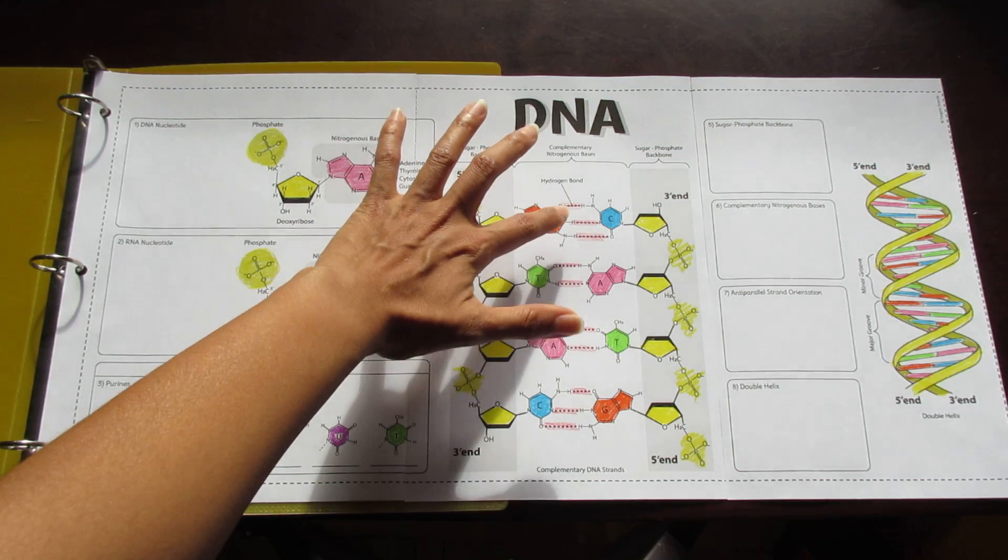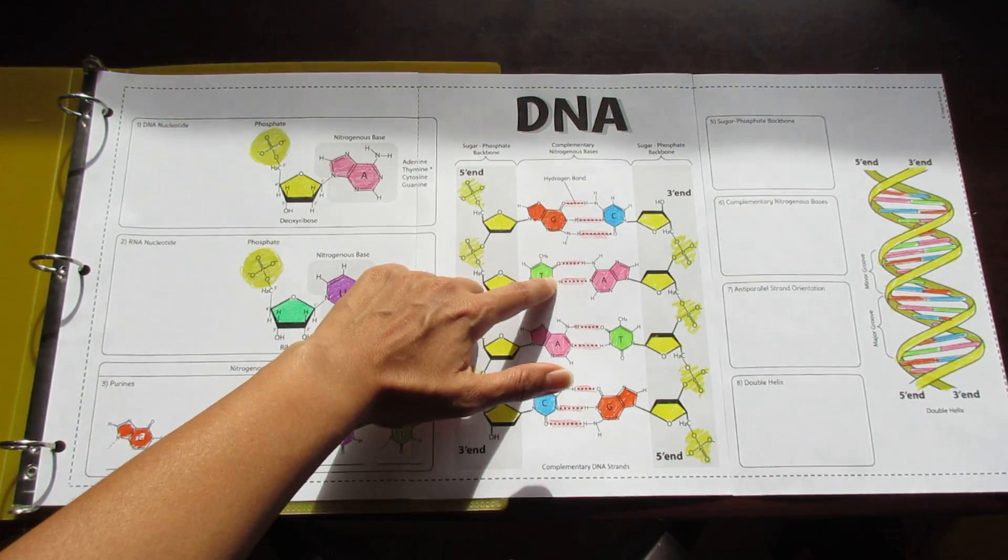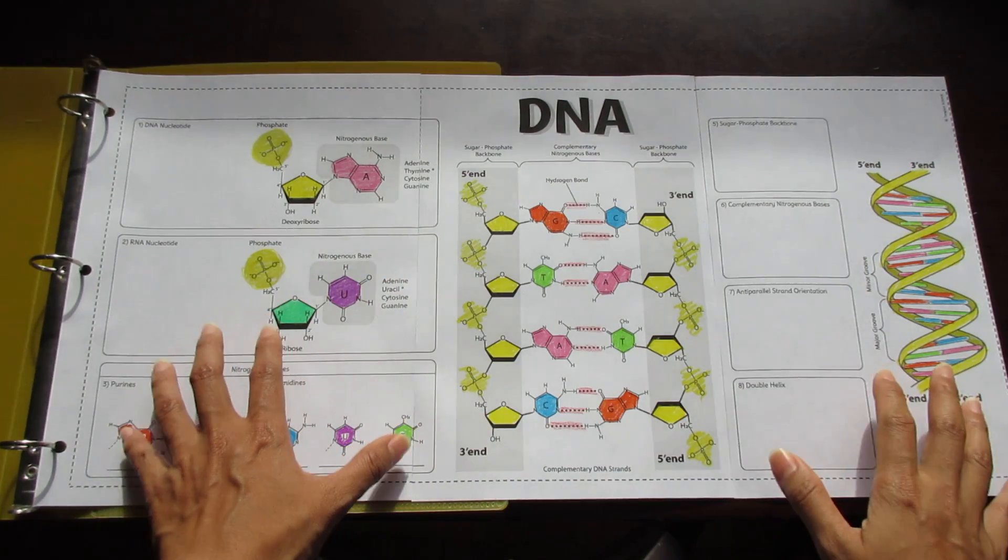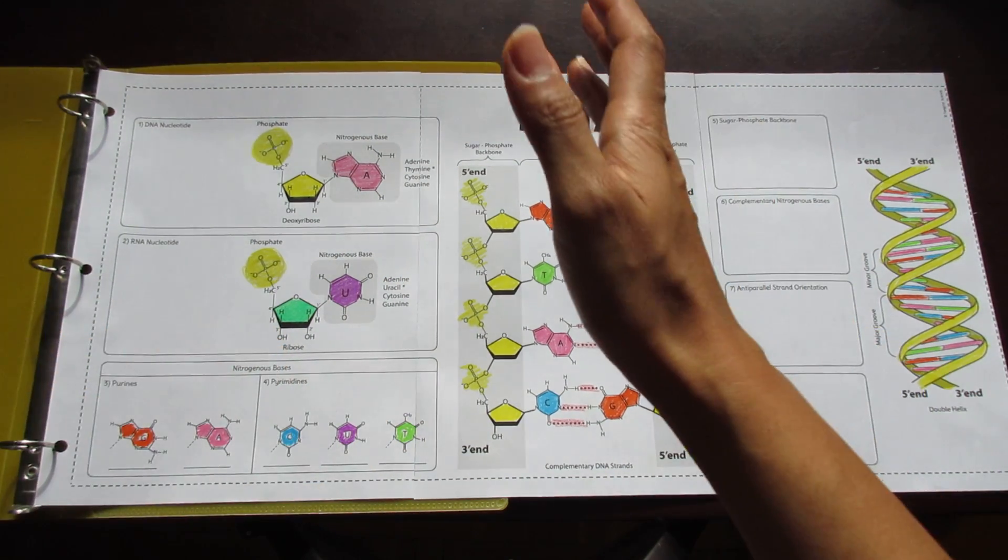Also highlighted are the number of hydrogen bonds between each, so there's three there, three there, two there, and two there. And of course, this is great for coloring.